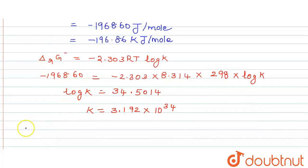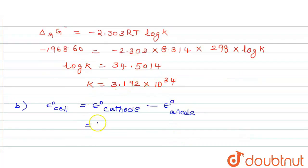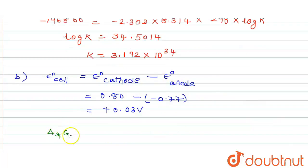And for the second clause B, in the same way we do for the second clause B. That is, E° cell is equal to E° cathode minus E° anode. And here, E° cathode is equal to 0.80 minus of minus 0.77. We get plus 0.03 volts.